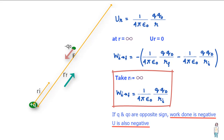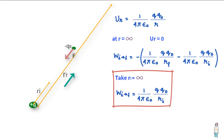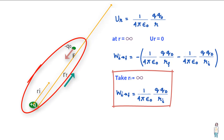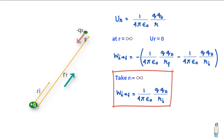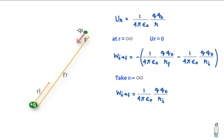You must also remember that potential energy U is a shared property of the two charges. The U value belongs to the Q and Q0 system, not to either charge considered alone. This is evident since both Q and Q0 appear in the formula. So if the distance between Q and Q0 changes from R_I to R_F, the change in potential energy is the same irrespective of which charge moves. We should never use the term 'electric potential energy of a point charge' because potential energy always belongs to a system of charges.